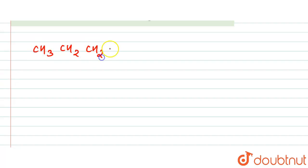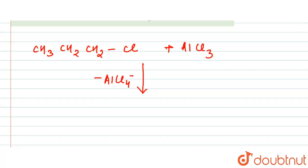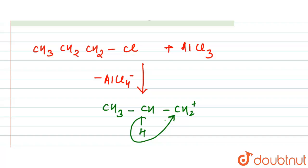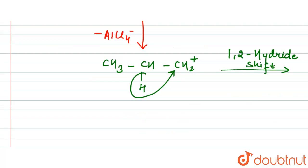Starting with the benzene ring. When n-propyl chloride reacts with aluminium chloride, we get minus AlCl4 minus and the formation of CH3-CH-CH2 plus — this is the n-propyl carbocation, which is less stable. So here we will have a 1,2-hydride shift, giving the isopropyl carbocation, which is more stable.